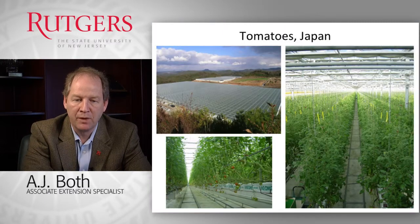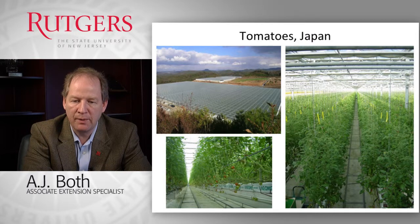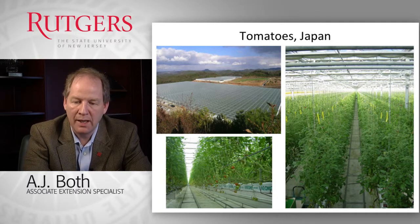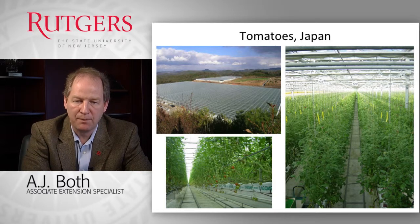Bedding plant producers are typically keen on hardening plant material off because it makes the survival rate higher once the consumer gets the plant material at home and is ready to plant them in their garden. We also grow lots of vegetables. Here you see an example of a very typical tomato greenhouse system — the high wire system where plants are supported from wires, shown here in a large range in Japan, but common anywhere around the world.